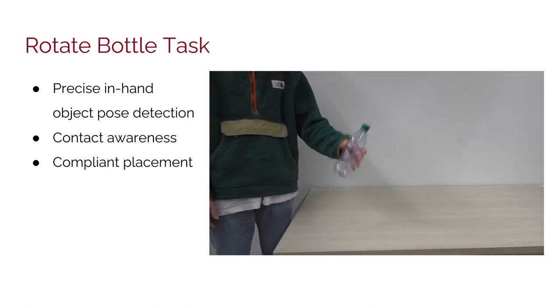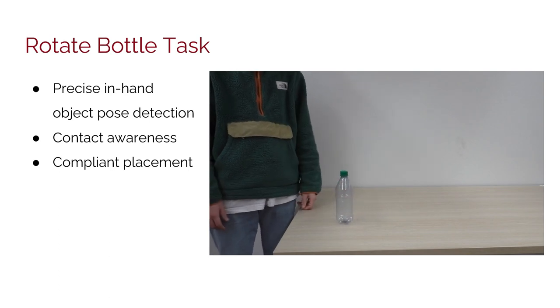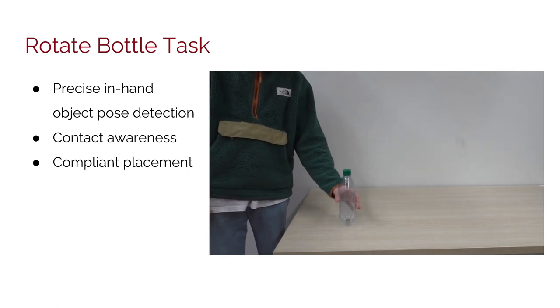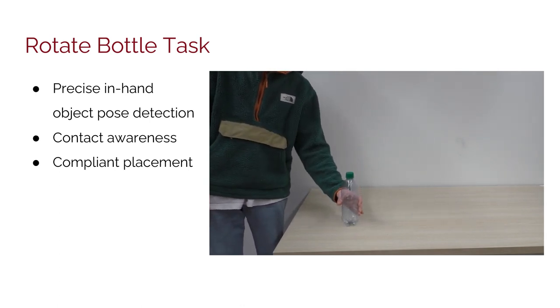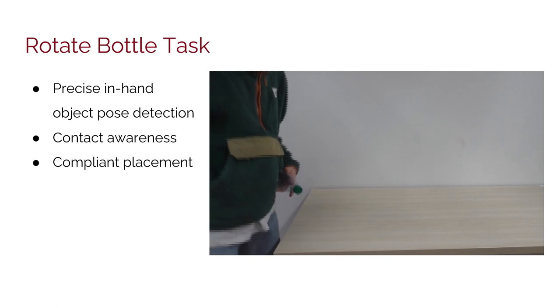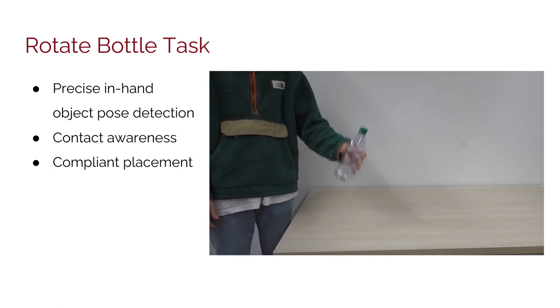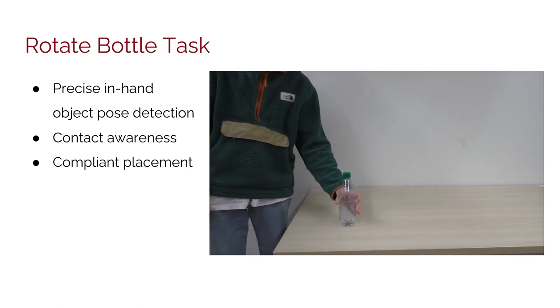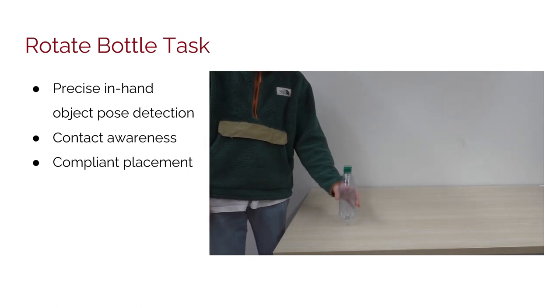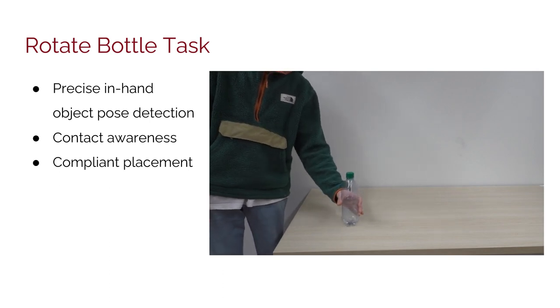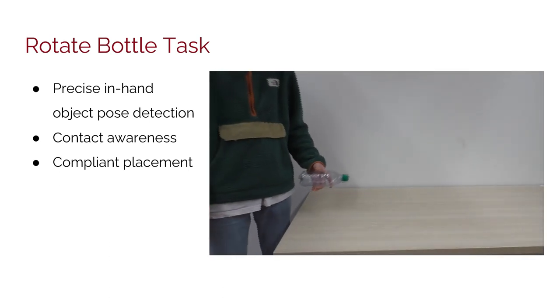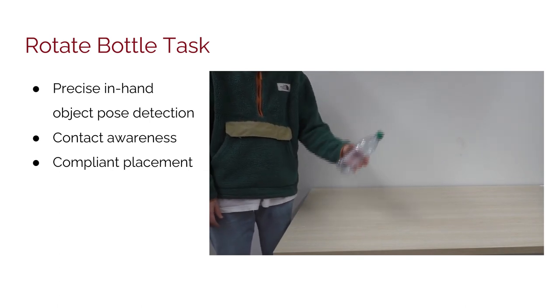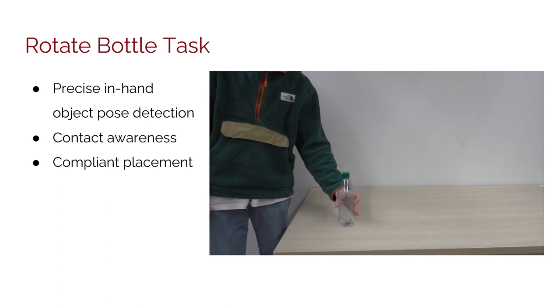The task we are attempting to accomplish is called the Rotate Bottle Task. This task is to simply rotate a bottle upright and place it on the table. As humans, we successfully perform this task countless times a day with variations in objects, initial configurations, and even with tactile information alone. We seamlessly implement precise in-hand object pose estimation by recognizing the rotation and translation through vision or touch. We recognize when the bottle has made contact with the table and when to release, all without vision. And we use the natural compliancy of our hands to ensure the placement of objects within a wide range of physical properties.